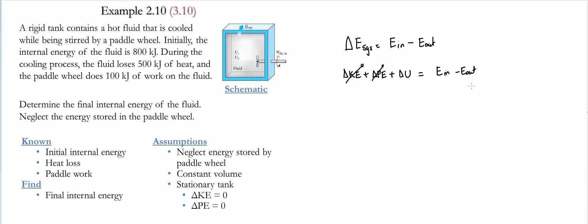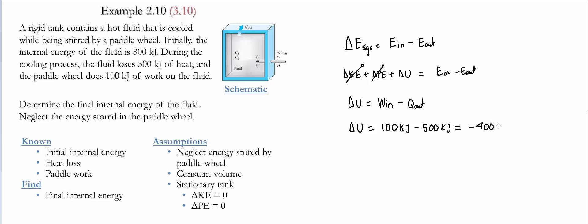For this particular problem, the amount of energy going in is the work done by the paddle wheel, and the amount of energy leaving is the heat released by the system. Therefore, the change in internal energy equals the work input minus the heat leaving. The work going in is 100 kilojoules and the heat leaving is 500 kilojoules, so the change in internal energy equals minus 400 kilojoules.